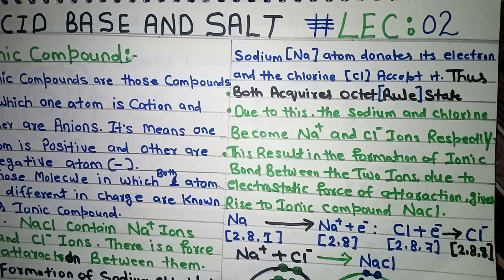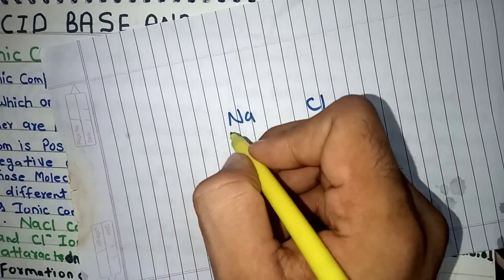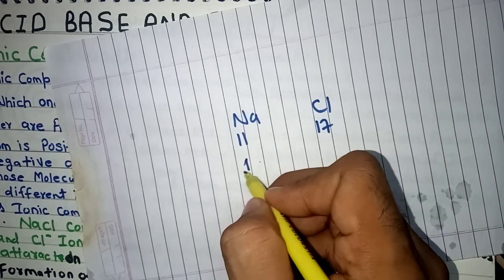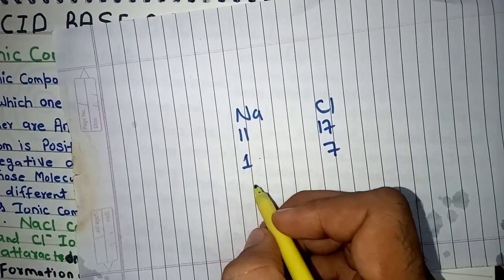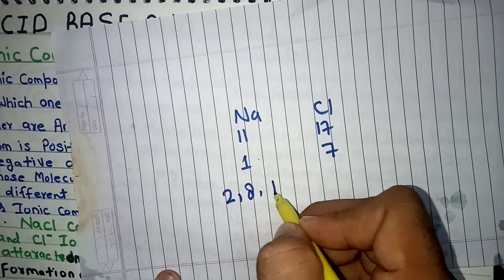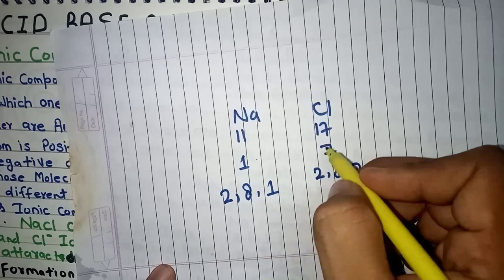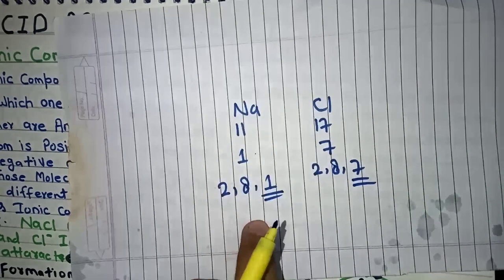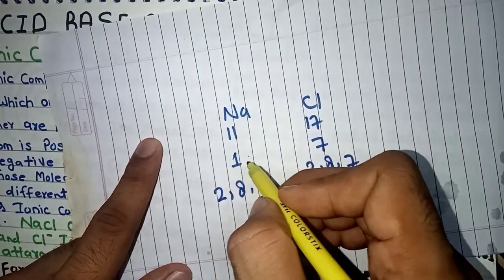In sodium chloride there are two elements: sodium and chlorine. Sodium's atomic number is 11 and chlorine's atomic number is 17. If you fill sodium's shells: 2, 8, 1 — one electron in the outermost shell. For chlorine: 2, 8, 7 — seven electrons in the outermost shell. So sodium has 1 outer electron and chlorine has 7. When these two atoms come close and form a bond, sodium's outer electron is given to chlorine.